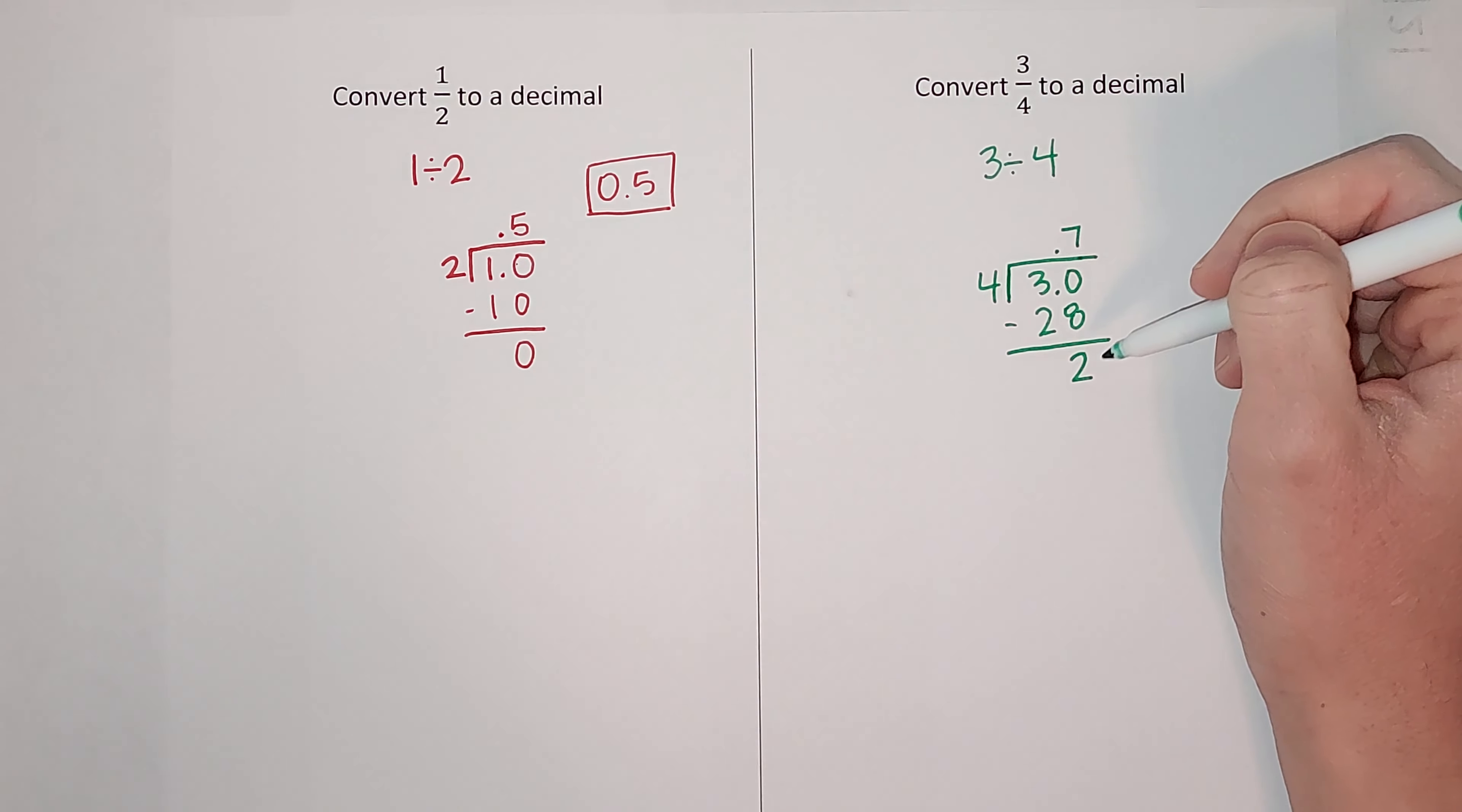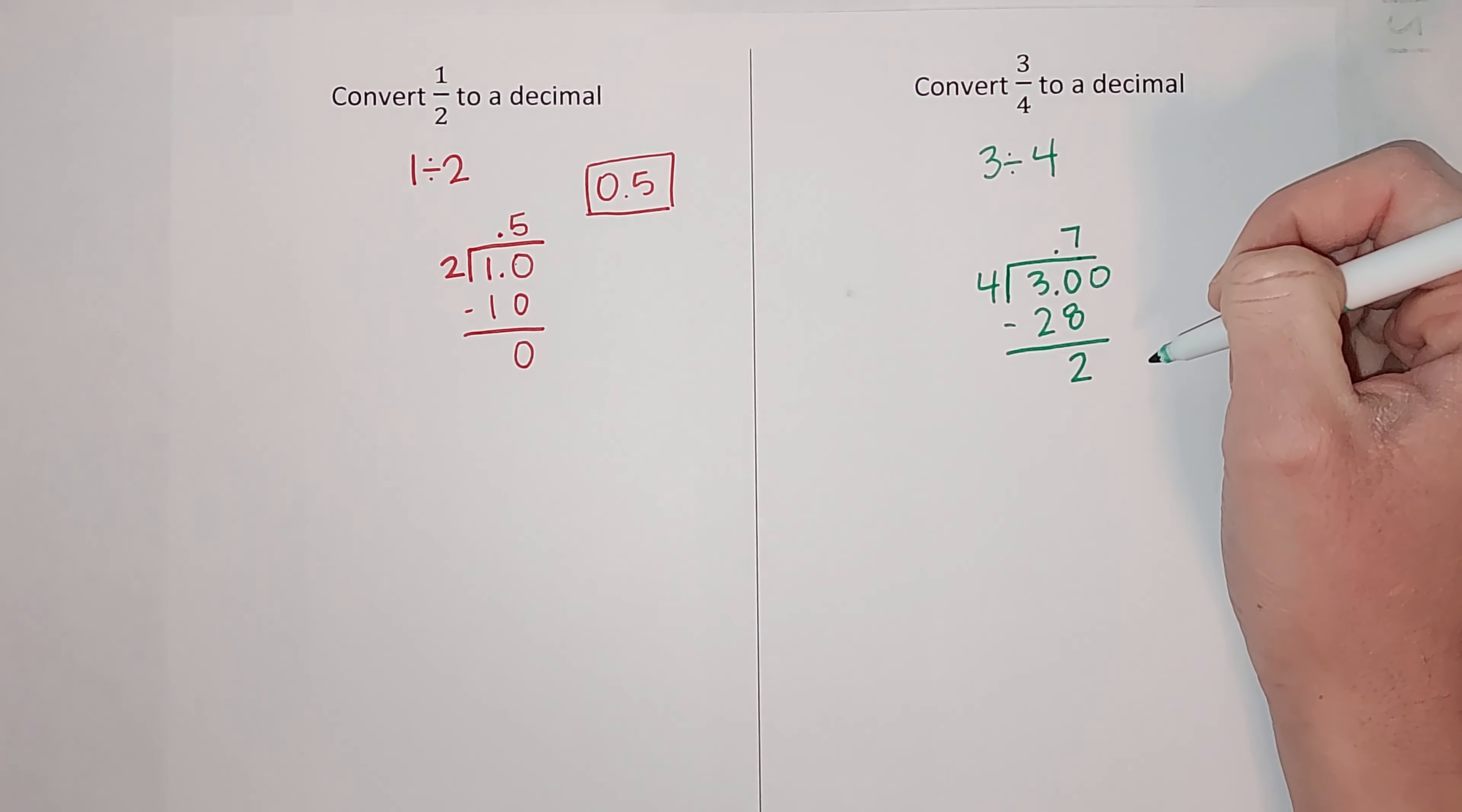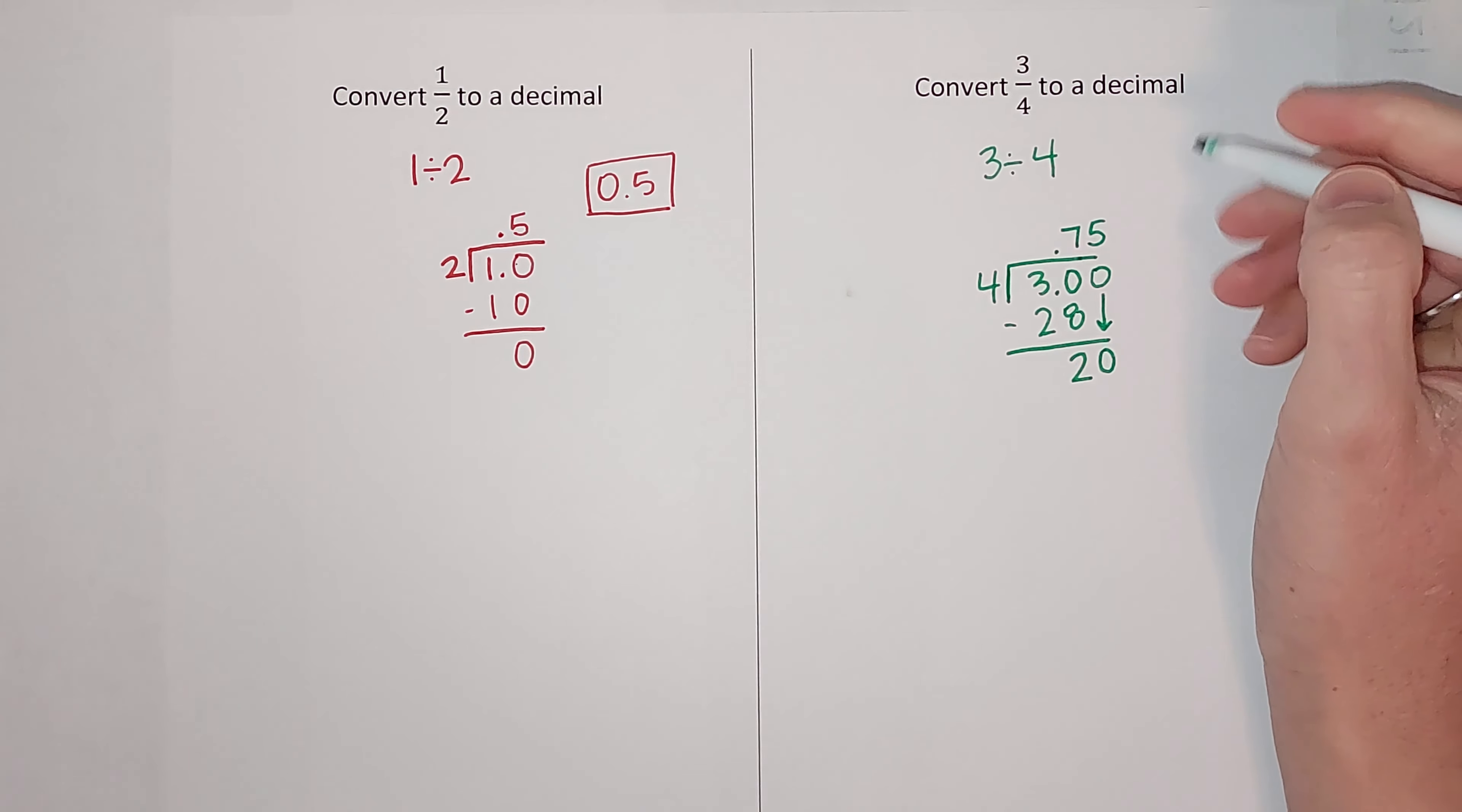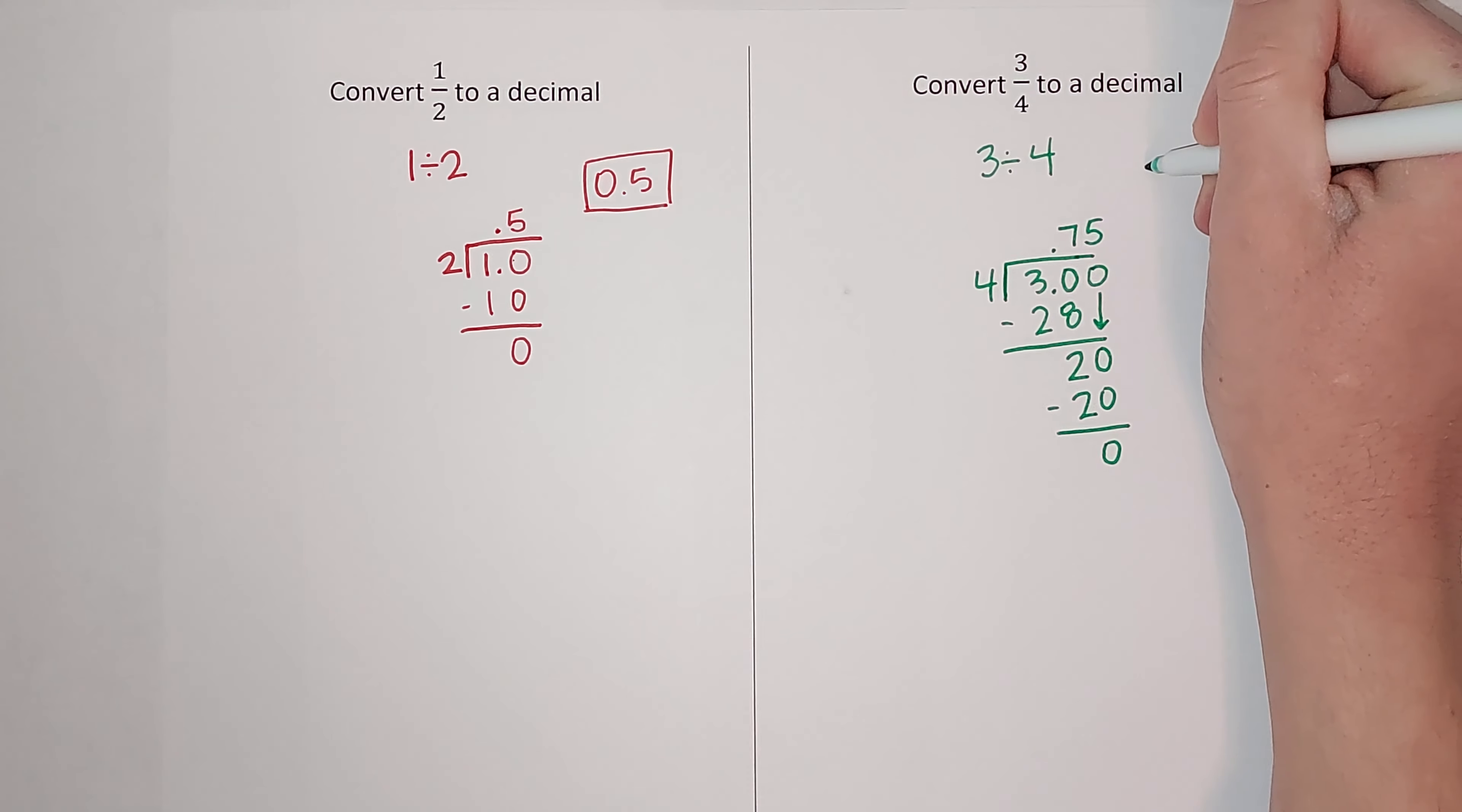Bring it down. Four goes into 20 five times. 5 times 4 gives me 20. Subtract it, zero. So look, there is my answer, 0.75. Now if you're like I could just do that with a calculator, yes you could, but I wanted you to see it.